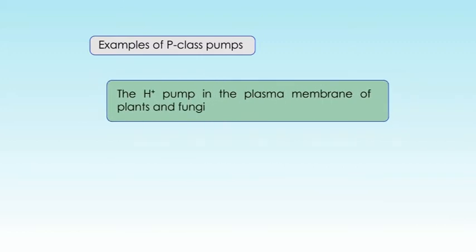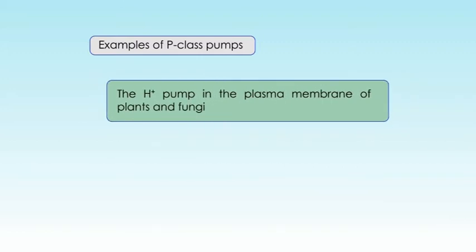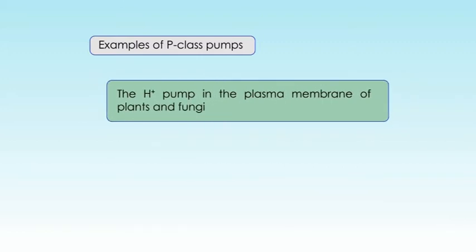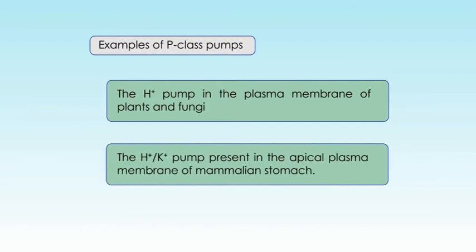Other examples of P-class pumps are the hydrogen pump in the plasma membrane of plants and fungi, and the hydrogen-potassium pump present in the apical plasma membrane of the mammalian stomach.